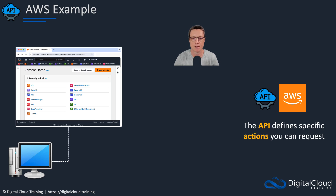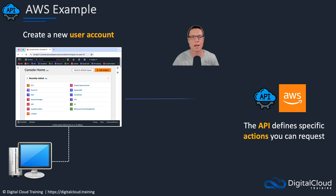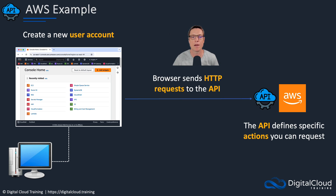Even when you're using the Management Console, everything results in an API call to AWS. It doesn't matter whether you're using the Management Console visual interface, the command line interface, or if you're a developer writing code using an SDK — you're always speaking to the AWS API. Behind the scenes, an API call is being made to AWS using the language of the internet, HTTP, along with GET, PUT, POST, and other methods to perform actions.